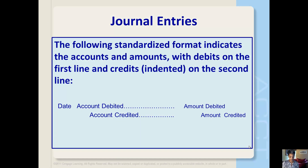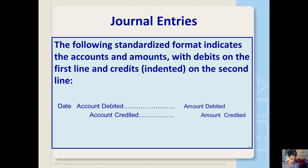At the far left of the journal is a column for the transaction date. To the right of the date is a column to record the names of the accounts affected by the transaction and an explanation. The accounts receiving debit entries are listed first, followed by the accounts receiving credit entries, which are slightly indented. To the right of the account names are debit and credit columns to record the monetary values of the transaction. The totals in the debit and credit columns should be the same for each transaction.